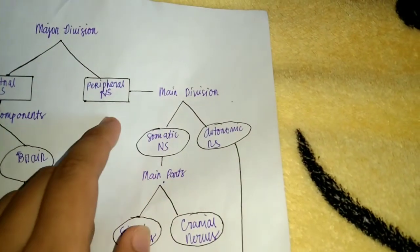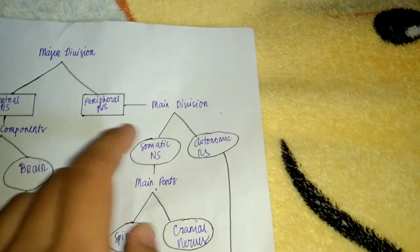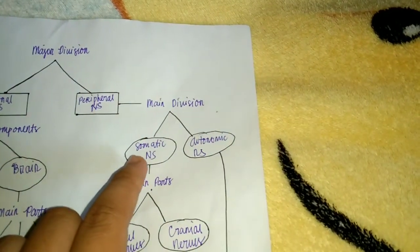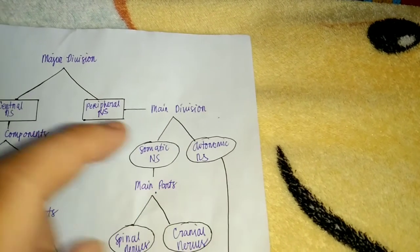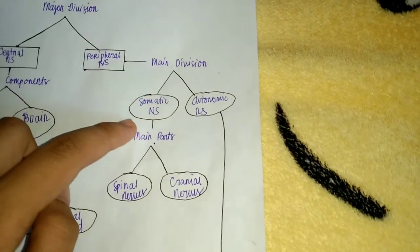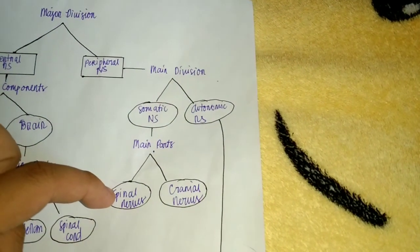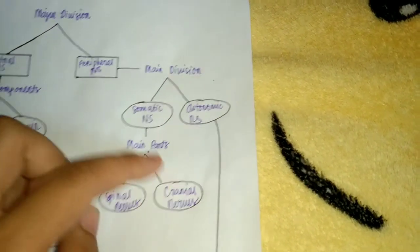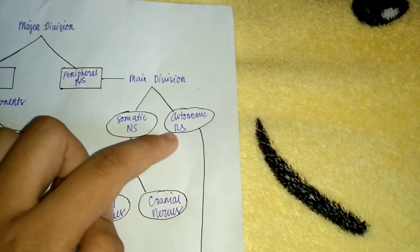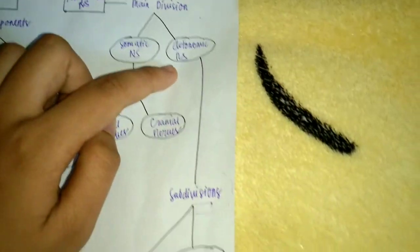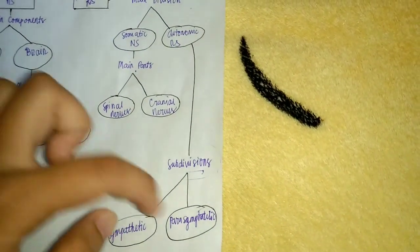The peripheral nervous system also has two main divisions: the somatic nervous system and the autonomic nervous system. The somatic nervous system consists of two main parts: the spinal nerves and cranial nerves. The autonomic nervous system likewise has two subdivisions: the sympathetic and the parasympathetic.